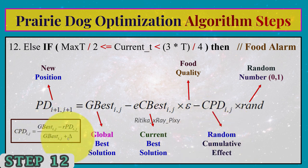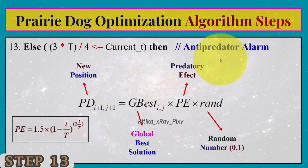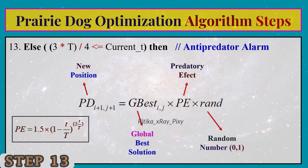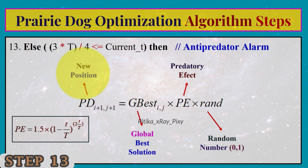The last mathematical model is the anti-predator alarm. During foraging, prairie dogs are often attacked by predators. In this algorithm, a predator attack is defined using the predatory effect equation. When the algorithm is stuck in local optima, this equation is used, creating a good balance between the exploration and exploitation phases.